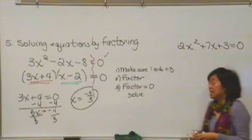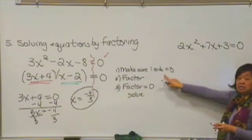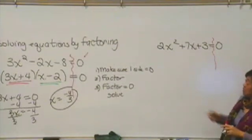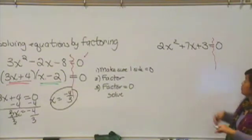All right, let's check and see how you did. Step one, let's make sure one side is equal to zero. And sure enough, it is. Step number two, we're going to take this side and we're going to factor it.